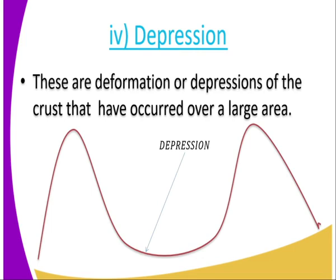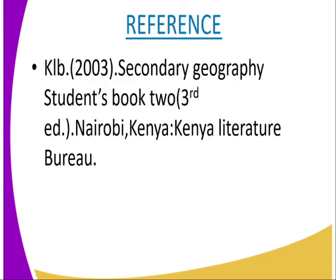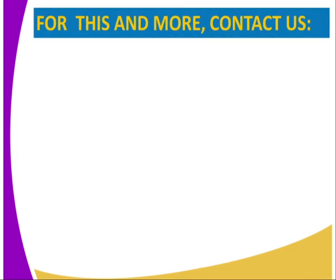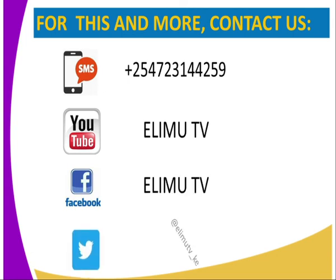Those are the features that result from folding. The activity for today: state four features resulting from folding, and state three theories that explain the formation of fold mountains. You can get more information from the KRB 2003 Secondary Geography Student Book 2. You can also contact us via SMS, YouTube, Facebook, or Twitter. Stay tuned to Edim TV. Thank you.